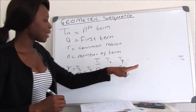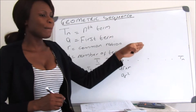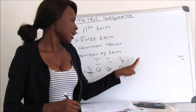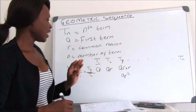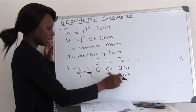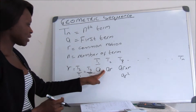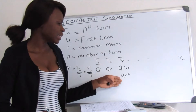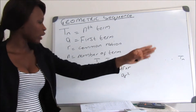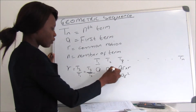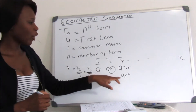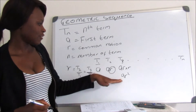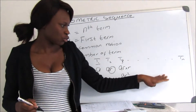The same thing happens for T4 — you multiply the previous term by the common ratio, giving AR cubed. Looking at the pattern, A is common in every term, but R's exponent changes according to the number of the term.